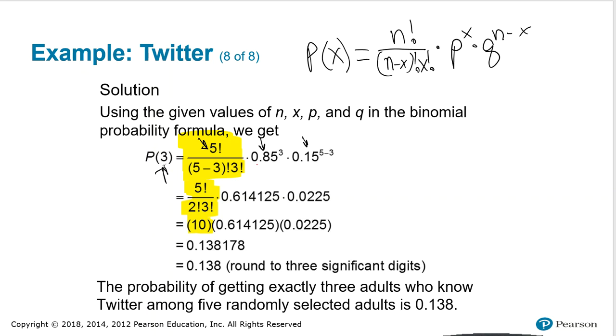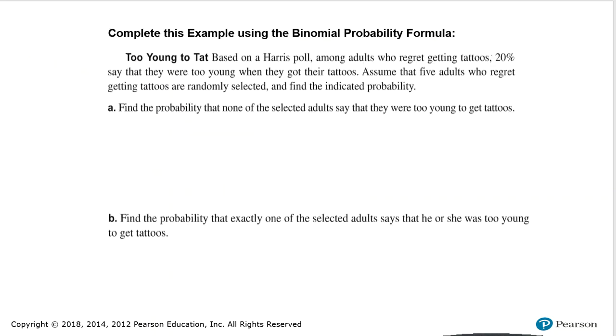Now let's try a problem. Complete this example using the binomial probability formula. Too young to tat. Based on a Harris poll, among adults who regret getting tattoos, 20% said they were too young when they got their tattoos. Assume that five adults who regret getting tattoos are randomly selected and find the indicated probability. This is actually a four part problem. We'll do the first two parts in this video, and the other two parts will be done in the next video.